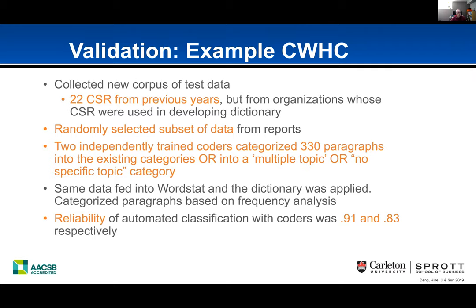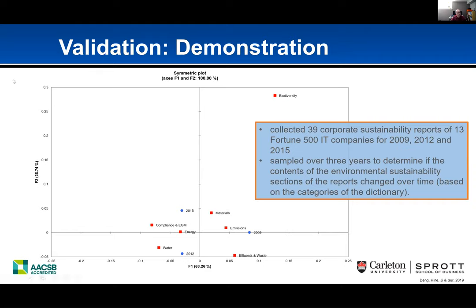Another validation approach is correspondence analysis — a powerful technique built into Wordstat. We wanted to see whether content across our categories changed over time, so we collected reports from 2009, 2012, and our 2015 data. Correspondence analysis takes large contingency tables and reduces them to a two-dimensional space. The x-axis always explains the most variance — in our case 63% — and the vertical axis explains around 37%. The middle point represents the average profile across categories and years.